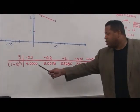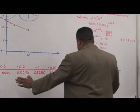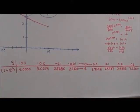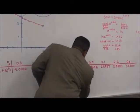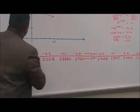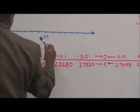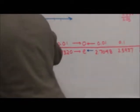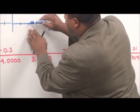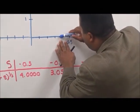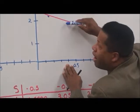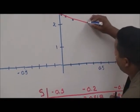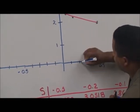These are our input values and these are our output values. Notice what's happening: as these values get closer and closer to 0 — as s approaches 0 on the x-axis — the output is getting closer and closer to some value on the y-axis.